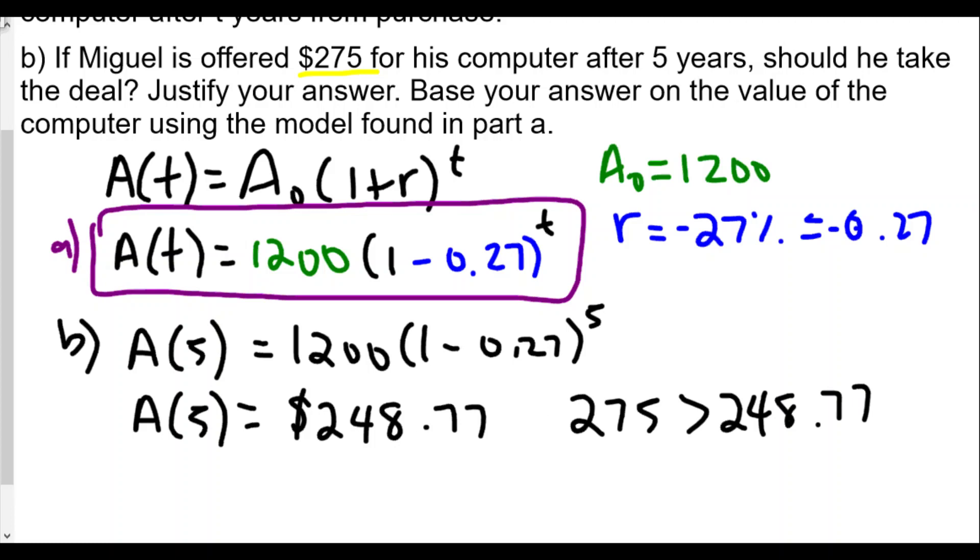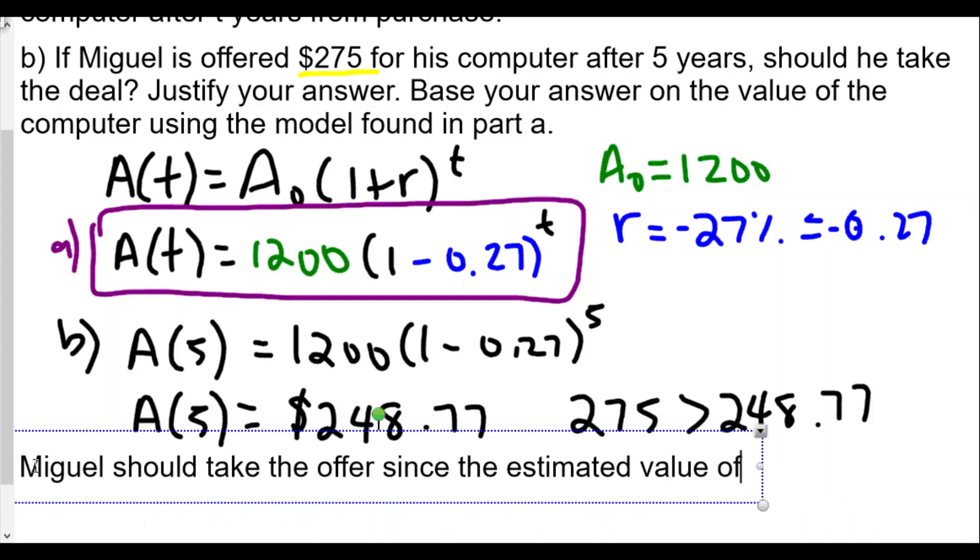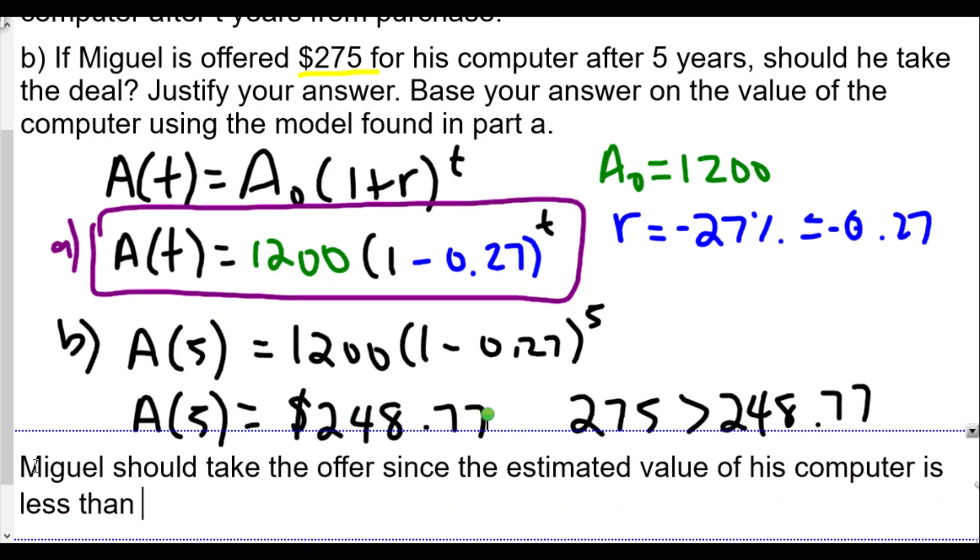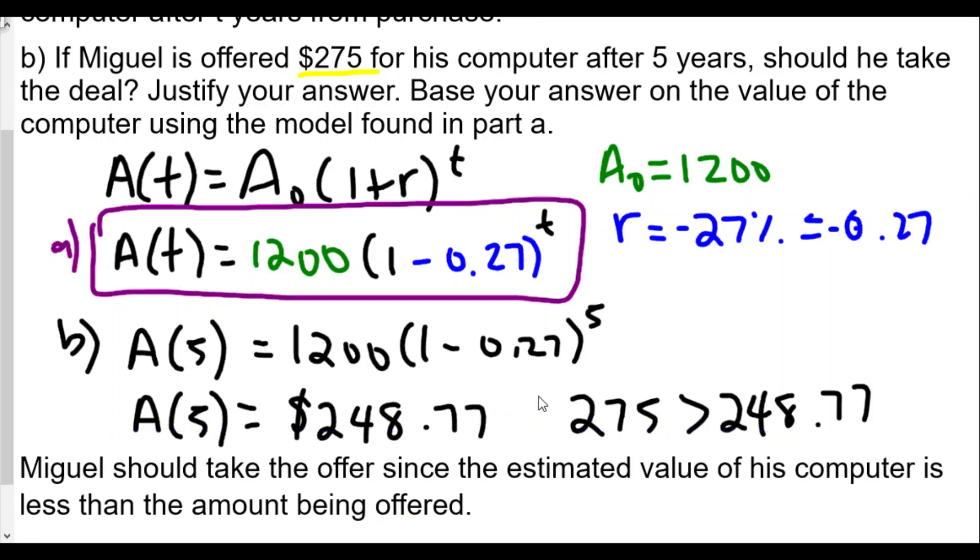We're going to comment and say Miguel should take the offer since the estimated value of his computer is less than the amount being offered. For him it's worth it because in his mind the computer is only worth $248.77. If someone's offering him more money for it, it's a good deal for him.